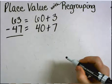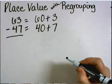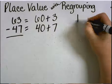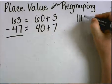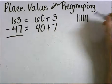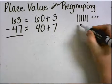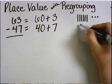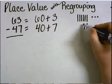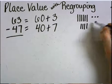Showing these numbers also in the base 10 picture, I would have 6 tens, or 60, and 3 ones. For the number 47, I would have 4 tens and 7 ones.